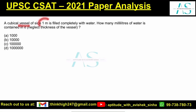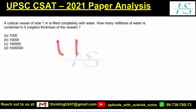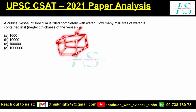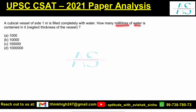A cubic vessel of side 1 meter is filled completely with water. How many milliliters of water is contained in it? Neglect the thickness of the vessel. We need to understand that this question is asking about the volume of the shape.